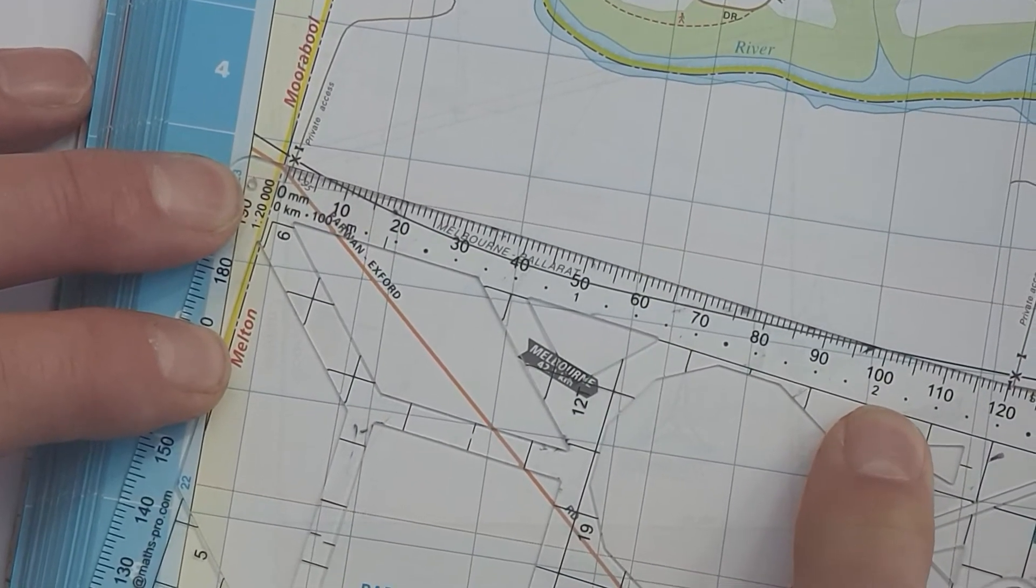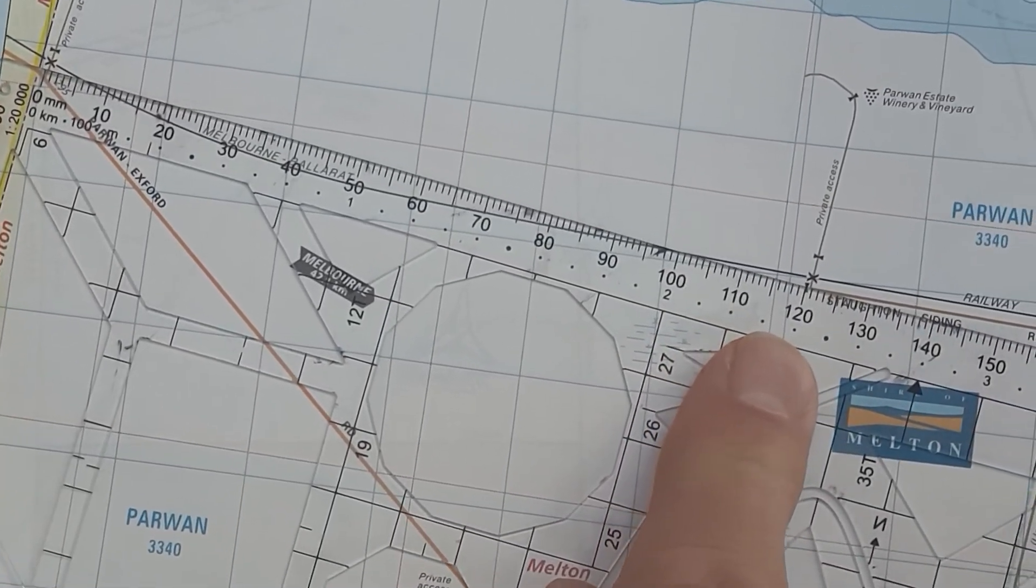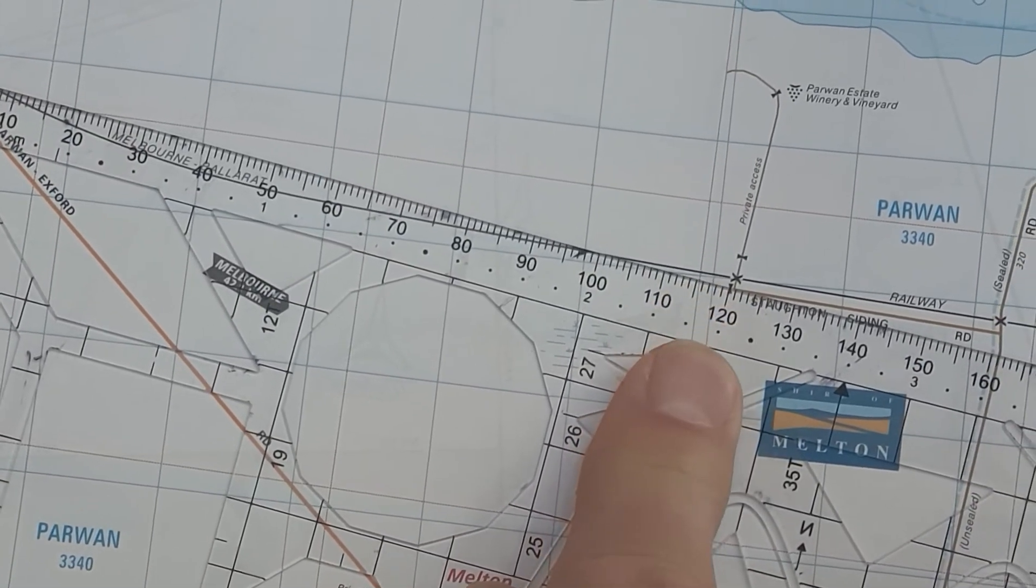That's the two there, and then each dot is 0.1, so 0.1, 0.2, 0.3, 0.4, and it looks about 2.4 kilometers to the next intersection.